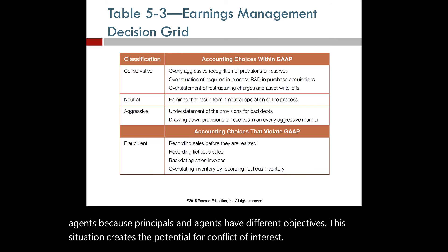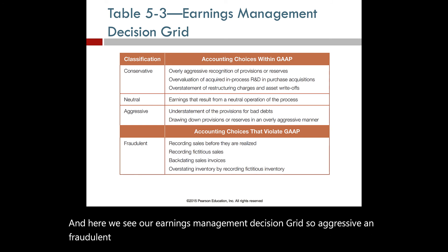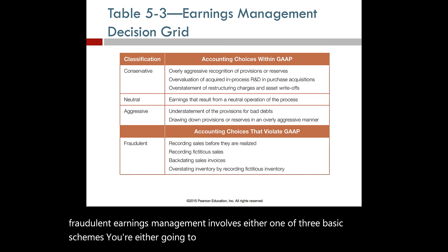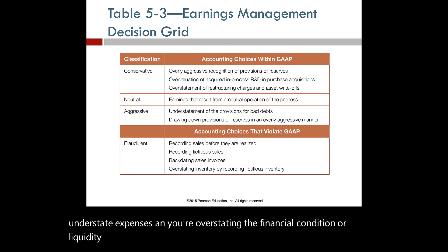Here we see our earnings management decision grid. Aggressive and fraudulent earnings management involves one of three basic schemes: you're either going to overstate revenues, understate expenses, or overstate the financial condition or liquidity of the company. This concludes our video lecture for this learning objective.